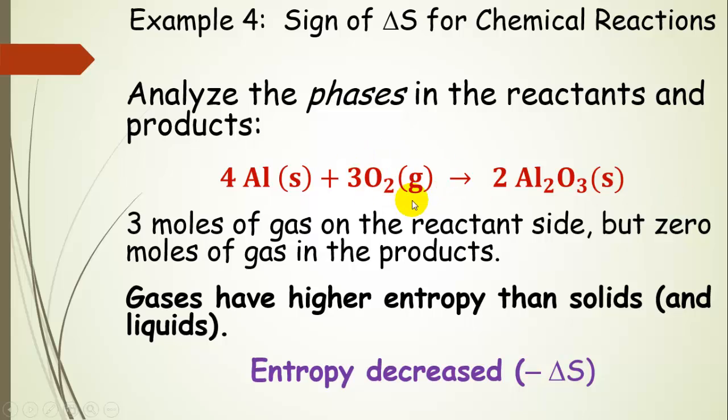Basically, we've taken all of the gas and transformed it to solid after it reacts with aluminum. Gases have a much higher entropy than solids. There are many more positions, many more microstates for a gas than for a solid where the particles are essentially fixed into place within that solid. So when we run this reaction, we actually decrease the entropy. There's a negative delta S for this process.